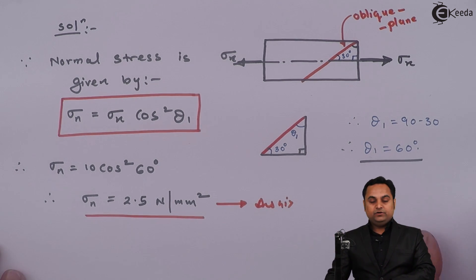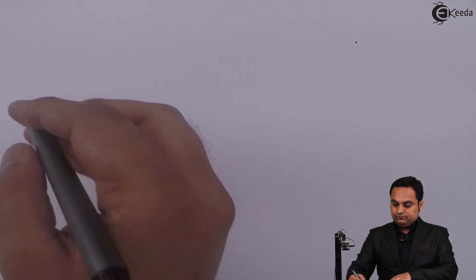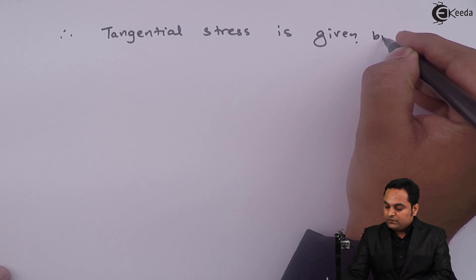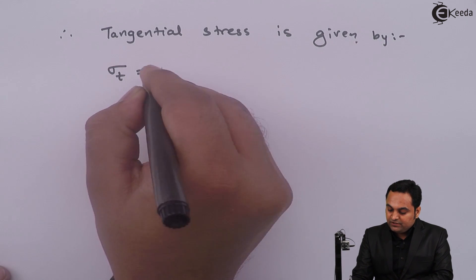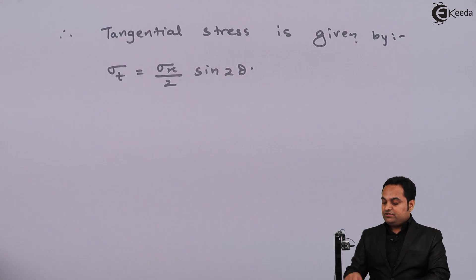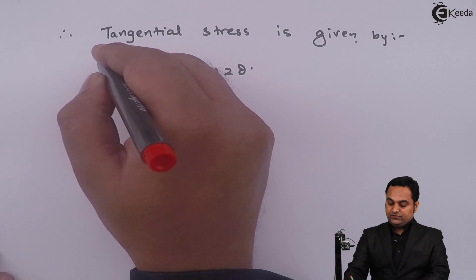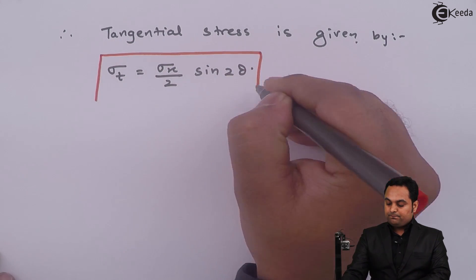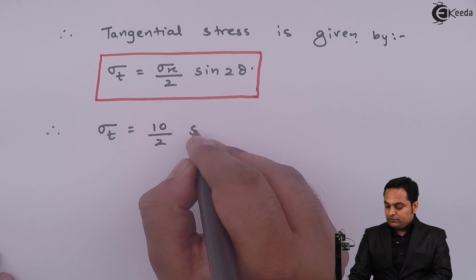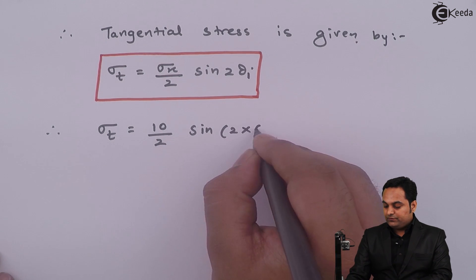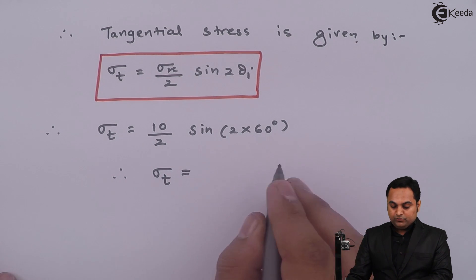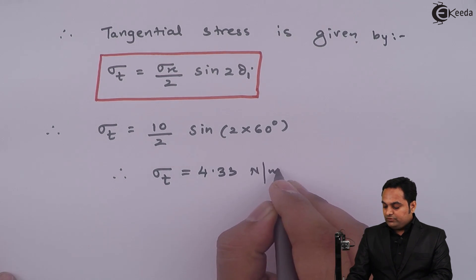Now in a similar manner we will calculate tangential stress. Tangential stress is given by: σₜ = (σₓ / 2) · sin(2θ₁). This is the formula to calculate the tangential stress, also called shear stress. Substituting σₓ = 10 and 2θ₁ = 2 × 60° = 120°, the answer of tangential stress comes out to be 4.33 Newton per mm square.